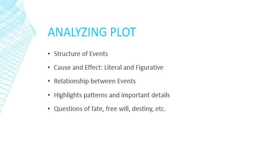How do we analyze plot? There are a number of things to keep in mind. What's the structure of the events? How do they proceed from one to the next? What's the logic of it? And is there a cause and effect implied — either a literal cause and effect, where something physically causes something else to happen, or a figurative cause and effect? What's the relationship between the events, figurative and metaphorical as well as literal? Are there similar types of events that occur, or opposed events — for example, something very good happens to a character at one point, then something very bad happens to them later?